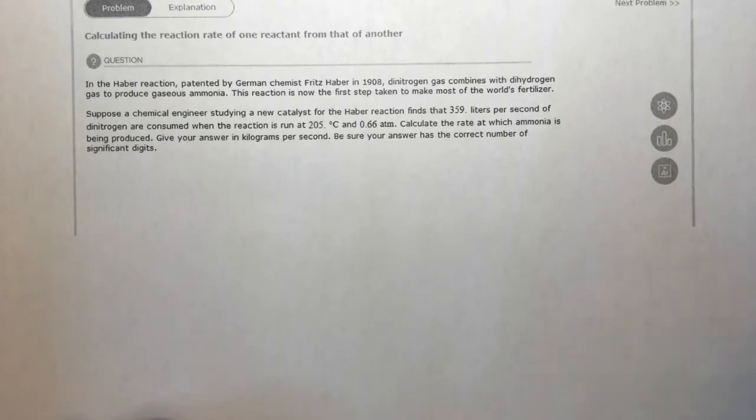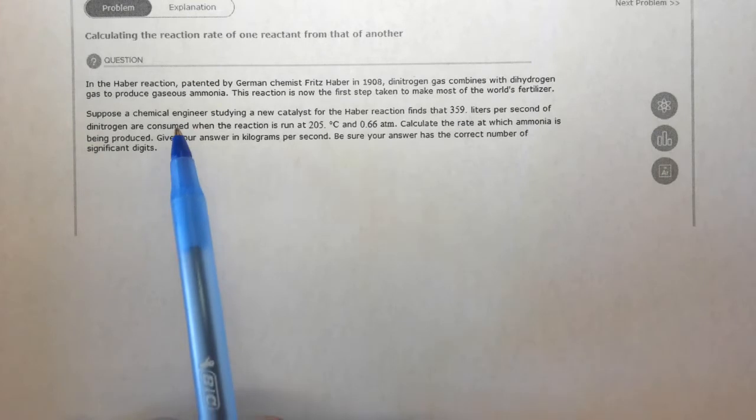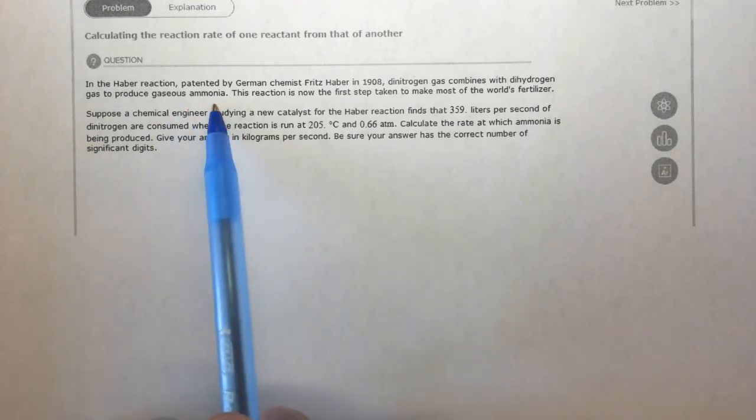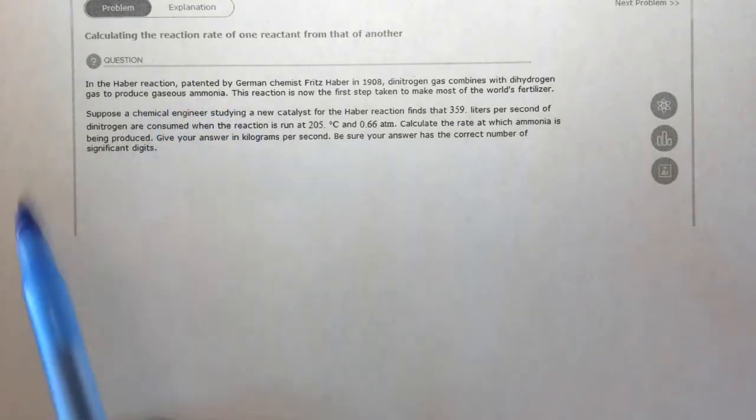So we have a reaction going on between nitrogen and hydrogen to form ammonia. In many of these questions, you may be asked to write a reactant or a product that you're not familiar with. Just simply google it. You need a balanced chemical equation.